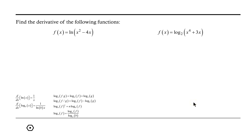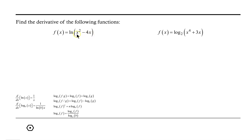Welcome. Let's take a look at finding the derivative of a couple of functions that are logarithmic and require the use of the chain rule. Our first function is f of x equals the natural log of x squared minus 4x. Notice that the argument, or the inside, of the natural log function is x squared minus 4x. Because this is more than just a single x, we will need to be using the chain rule.